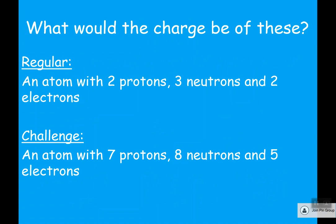Let's go through the answers to the practice questions. First: two protons give plus two, three neutrons give zero, two electrons give minus two — overall charge is zero. Second: seven protons give plus seven, eight neutrons give zero, five electrons give minus five — plus seven minus five gives a charge of plus two.